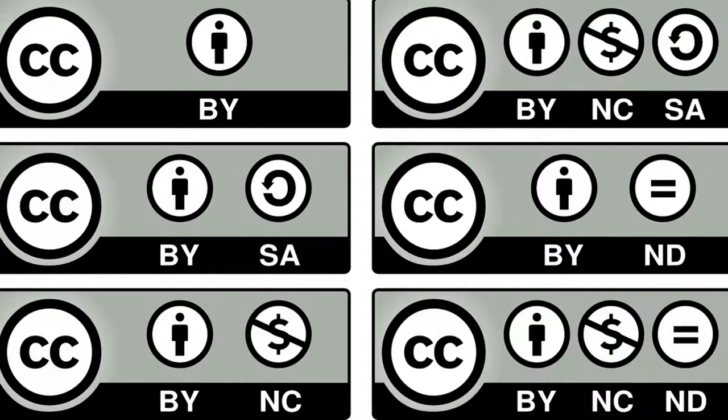Hello everybody. Today we want to talk about creative commons licenses and give a broad overview of the six licenses that copyright holders can deploy to share their work and still maintain underlying copyright ownership. I do have another video here on the channel about the CC0 license that helps copyright owners put works out into the public domain — that's a separate idea, so please go check that video out after this.